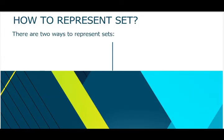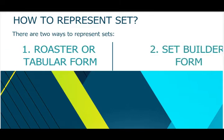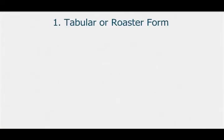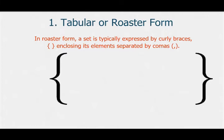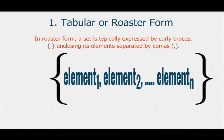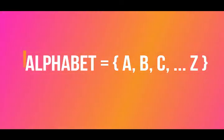Next, let us understand how to represent sets. There are two ways: one is called the roster or tabular form, and the other is the set builder form. In roster form, a set is typically expressed by curly braces enclosing its items separated by commas. For instance, if A is the set of English alphabets, we can write it in tabular or roster form with the set name followed by the members in curly braces, separated by commas.